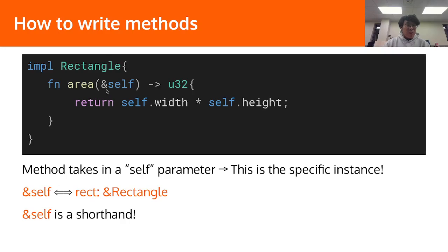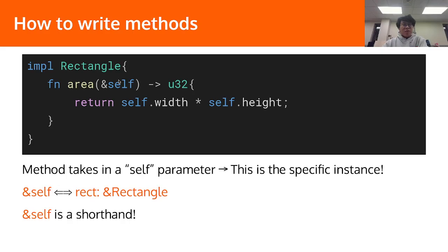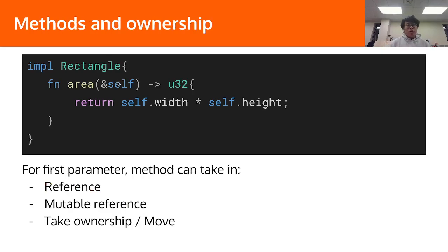The `&self` is actually a shorthand — it's equivalent to passing in `rect: &Rectangle` as we had in the plain function. The `self` takes in the type of whichever struct's impl block it is found in. Since we've learned about ownership, it's worth noting here: `&self` means it takes in a reference, doesn't take ownership, and doesn't take a mutable reference. So we cannot mutate the instance in this function — we can only read the values, which is what we're doing.